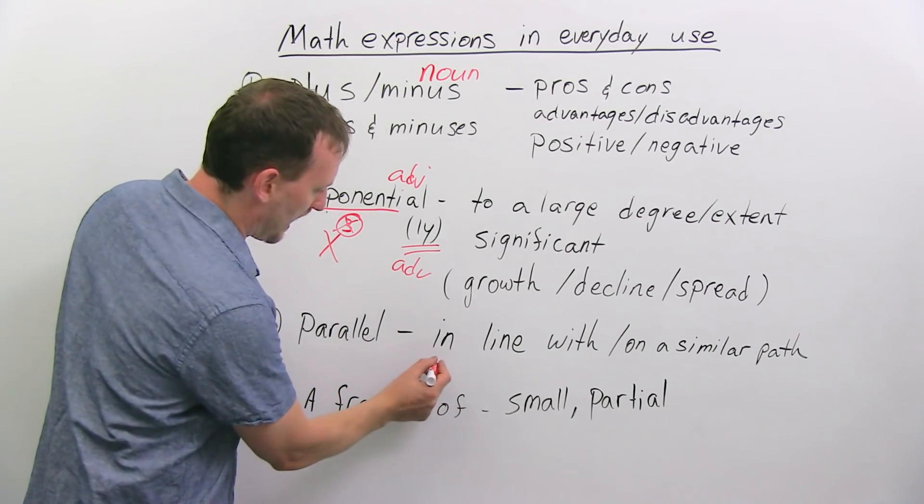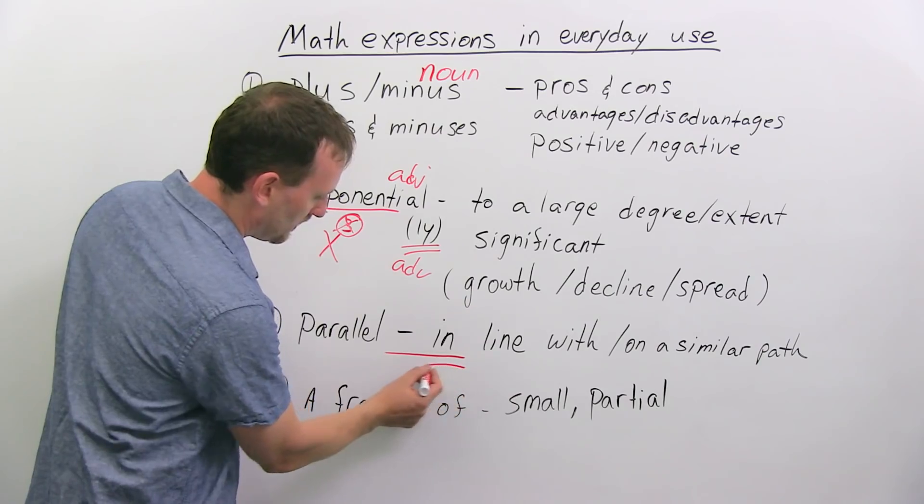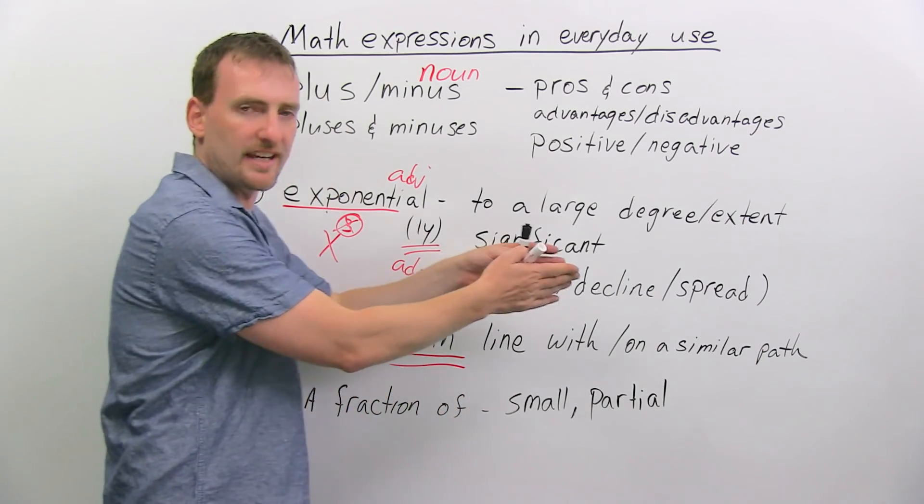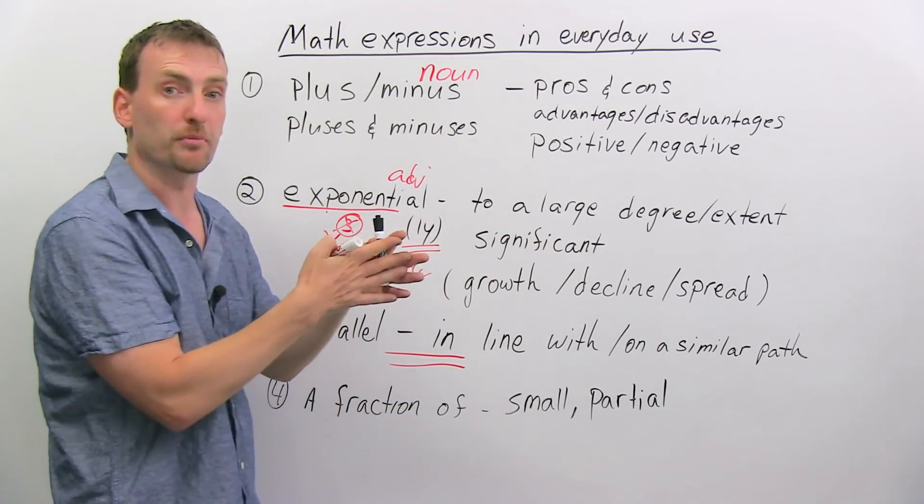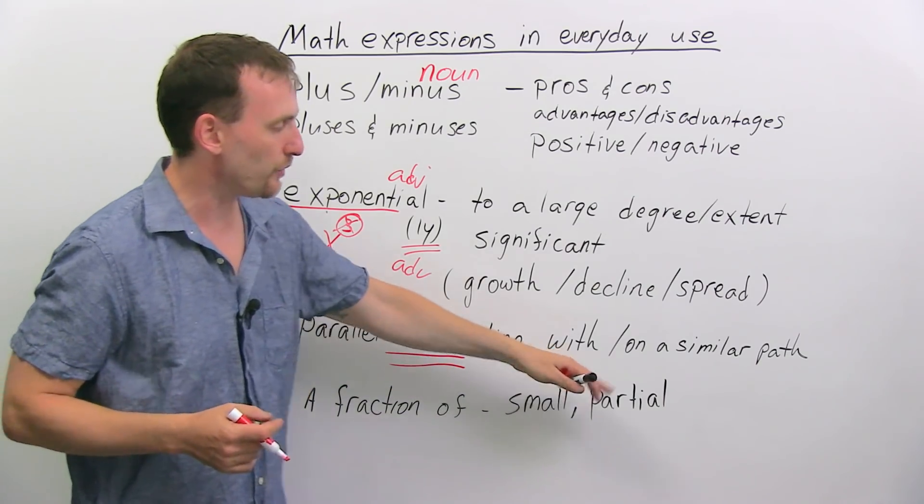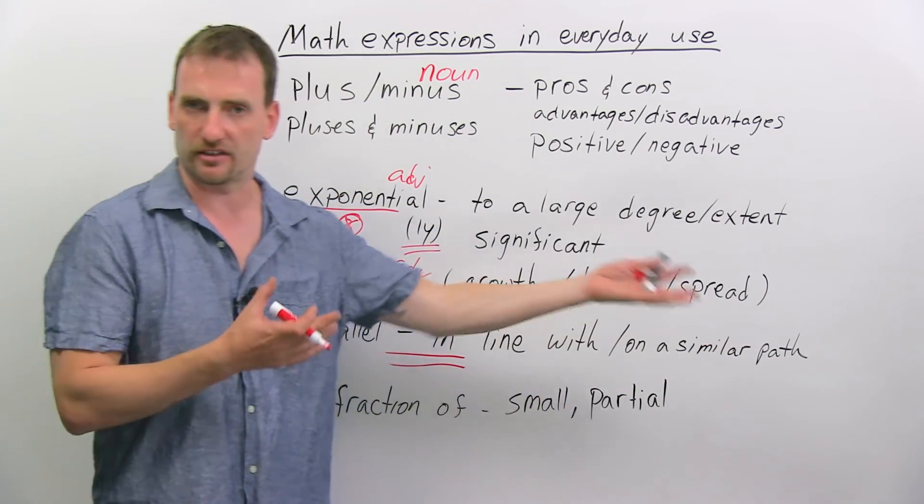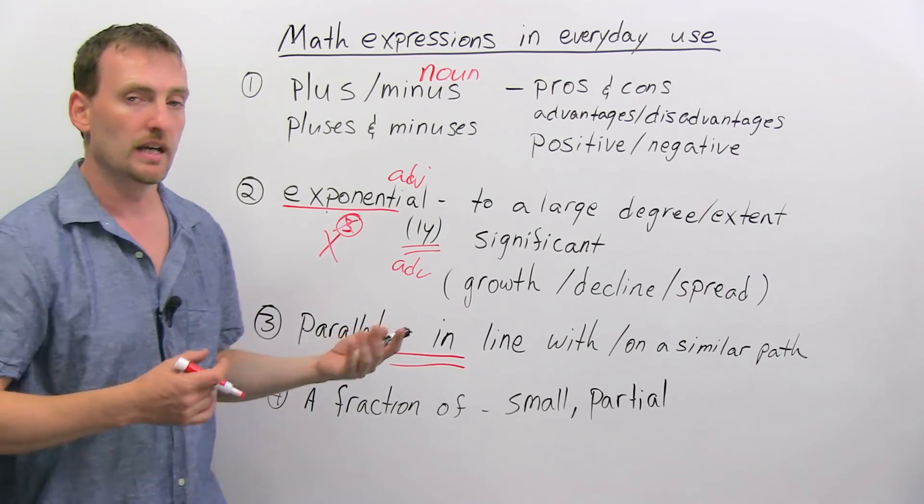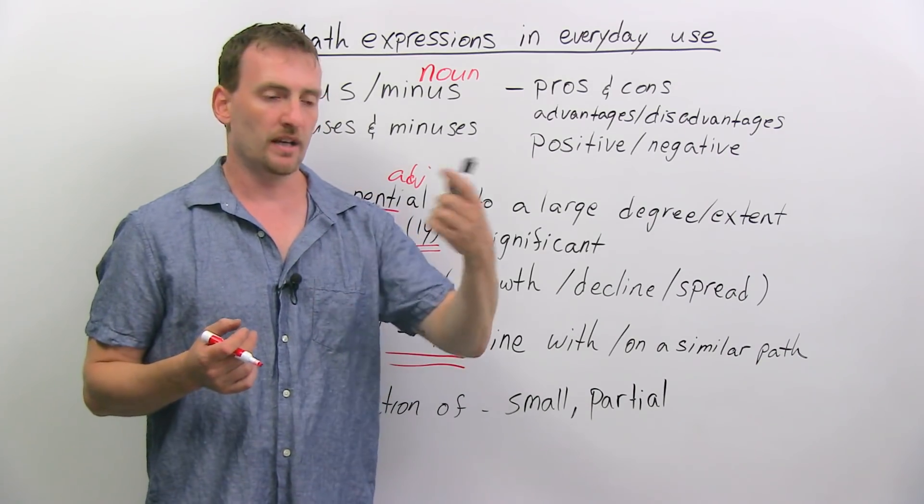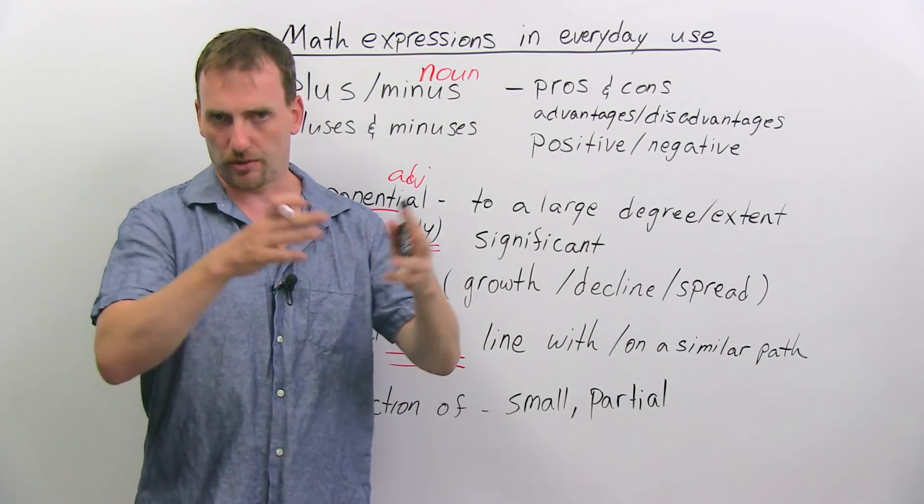Parallel. Now, parallel lines are lines that run along the same path in the same direction, but never meet. So we say it's in line with or on a similar path. These are synonyms to parallel.